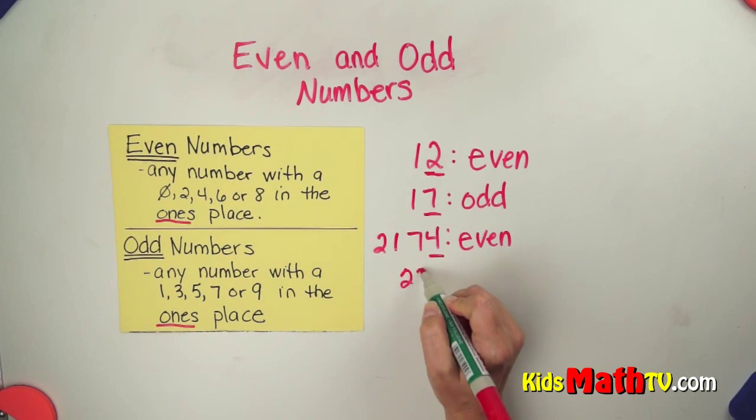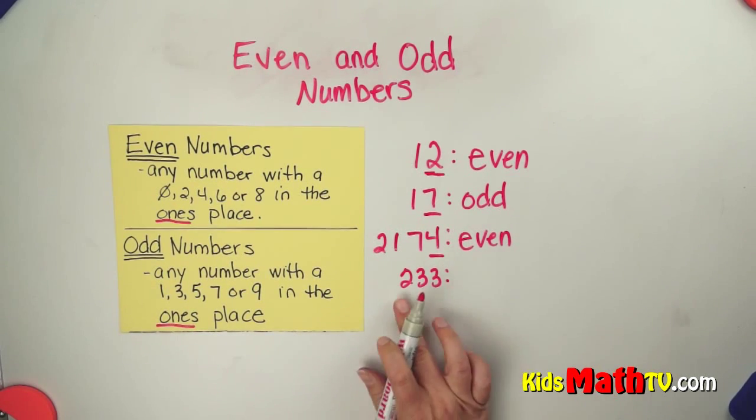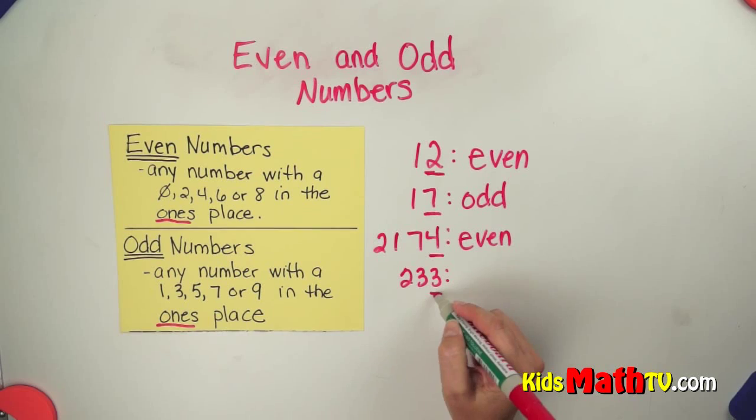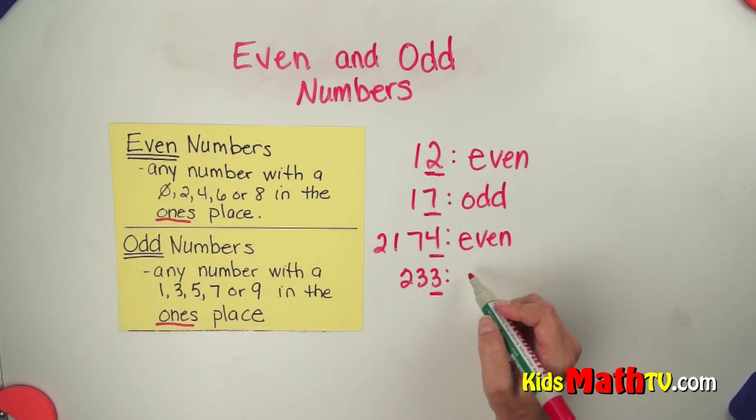Let's try 233. Again, I don't worry about the tens or the hundreds. I simply look at the ones place. The 3 is in this list, so it is an odd number.